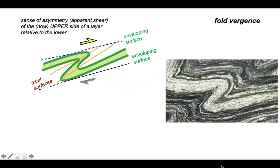Here's a small fold structure. We're now going to develop the concept of fold vergence. It works in the same way as cleavage vergence. It's the sense of apparent shear of the upper side of a layer relative to the lower. You have minor fold structures that are asymmetric pairs which have that geometry with respect to the shear sense.